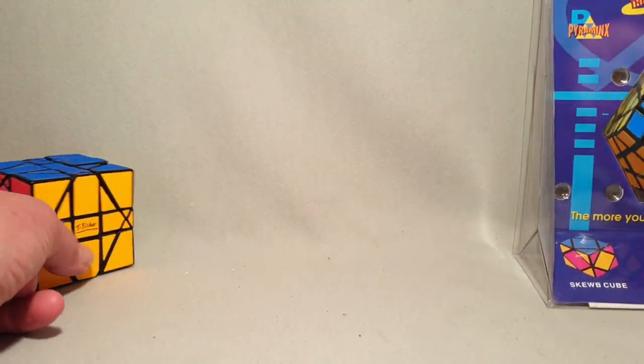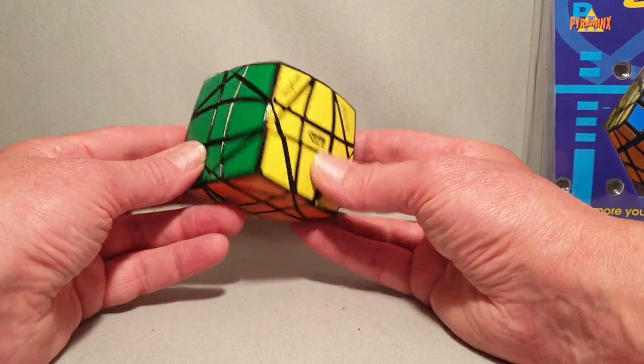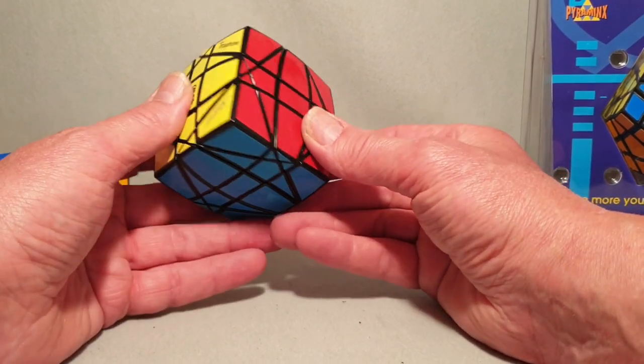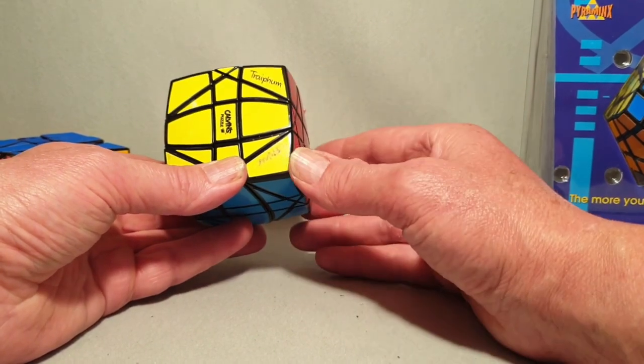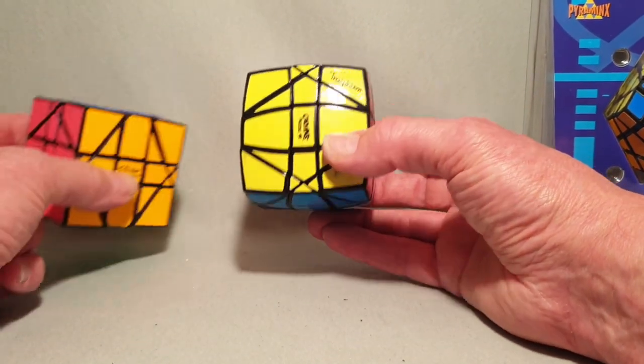In 2013, though, Calvin mass-produced it in a pillowed form. And it was based on Trayfum's design. Although it's still basically a hexamix.